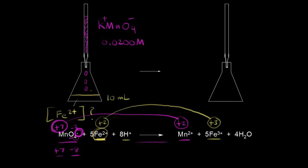As we drip in our potassium permanganate, we're forming our products. These ions are colorless in solution, so as the permanganate reacts, the purple color disappears and we should have a colorless solution. Let's say we've added a lot of permanganate — everything is colorless — but then we add one more drop and a light purple color persists. This must mean we have a tiny excess of unreacted permanganate ions in solution.